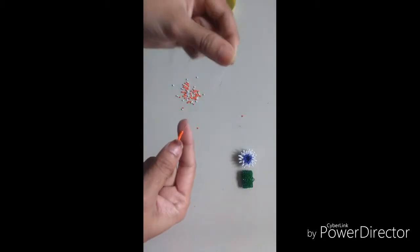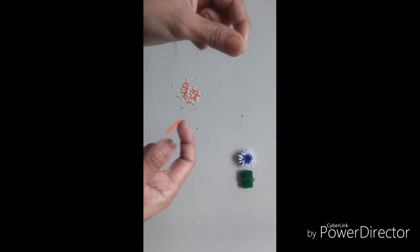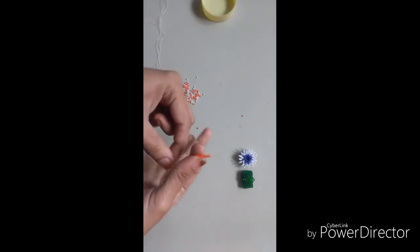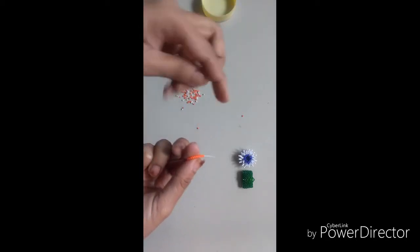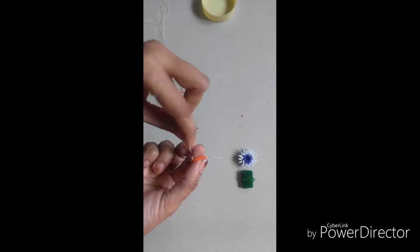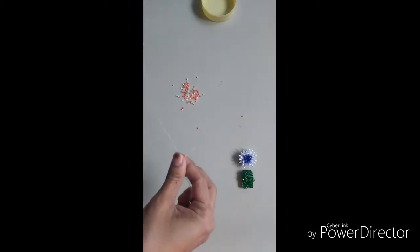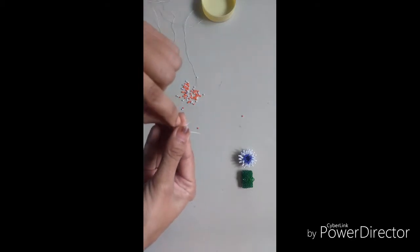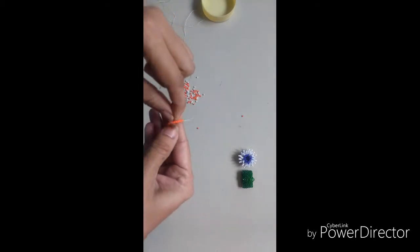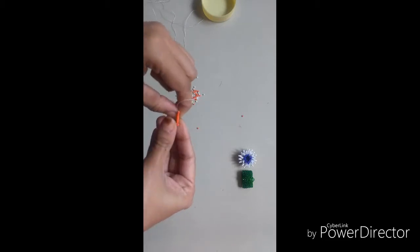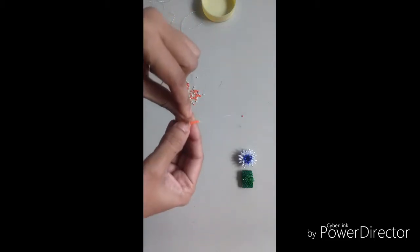Make a knot. This is our starting point. Take 11 seed beads. Then we will skip two and just come out of third number bead. This is basic peyote stitch I'm using here. Make it like this.